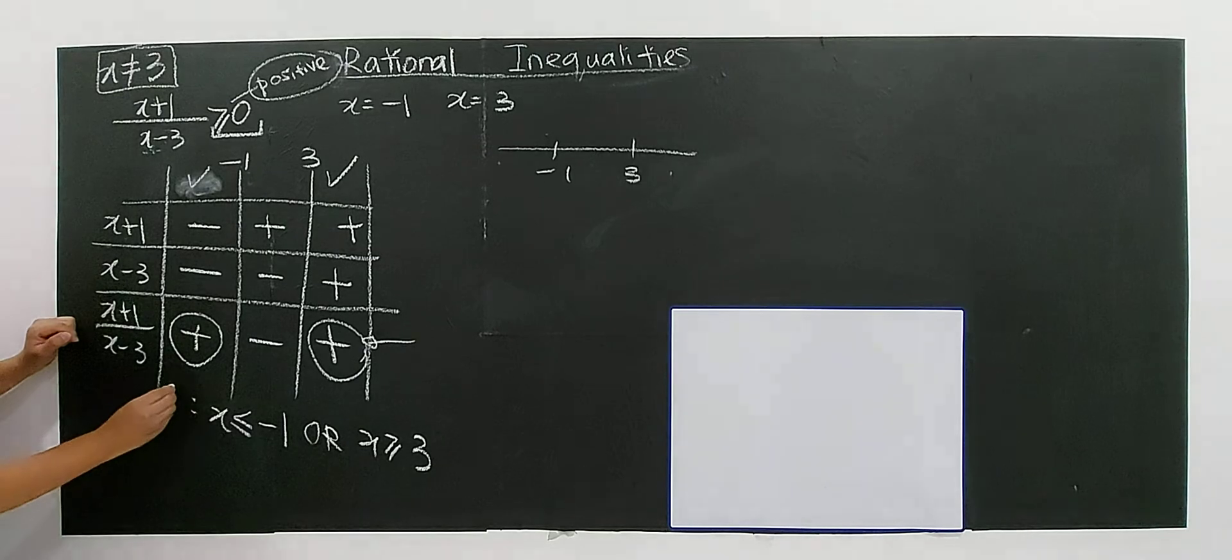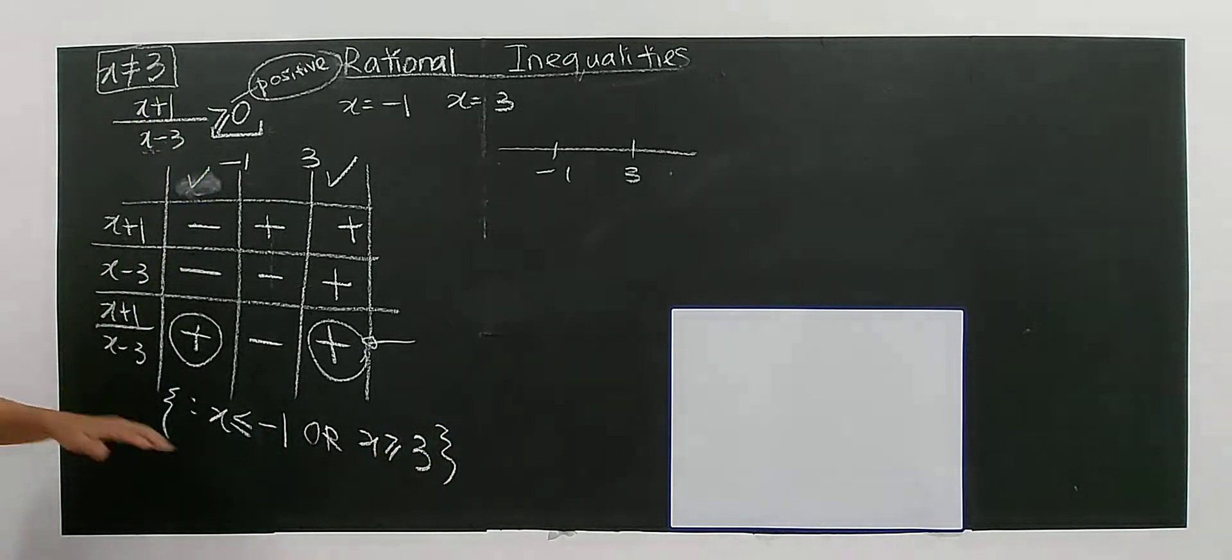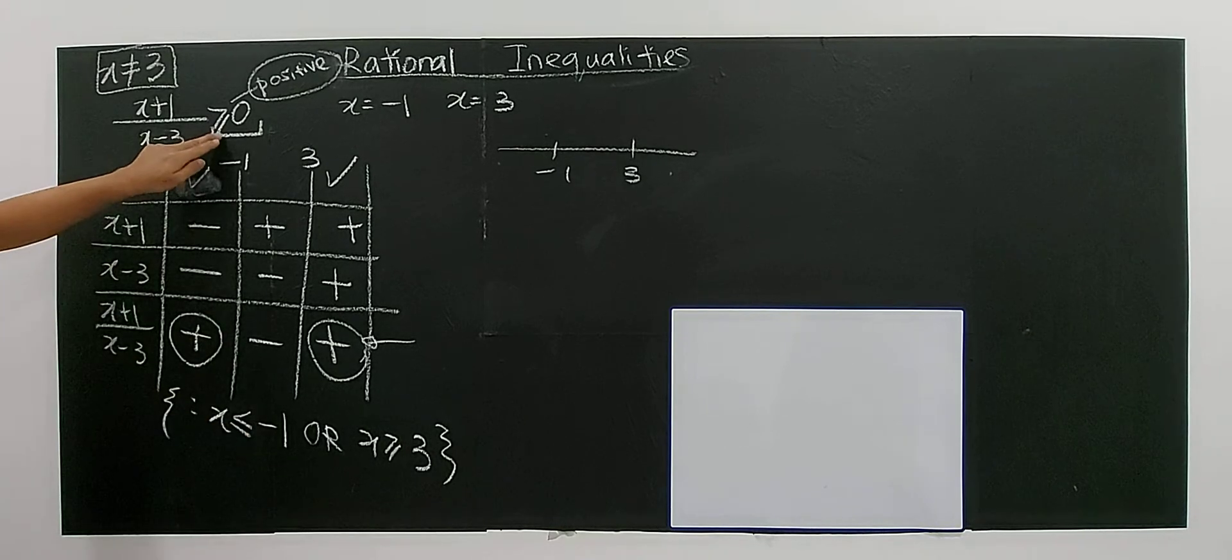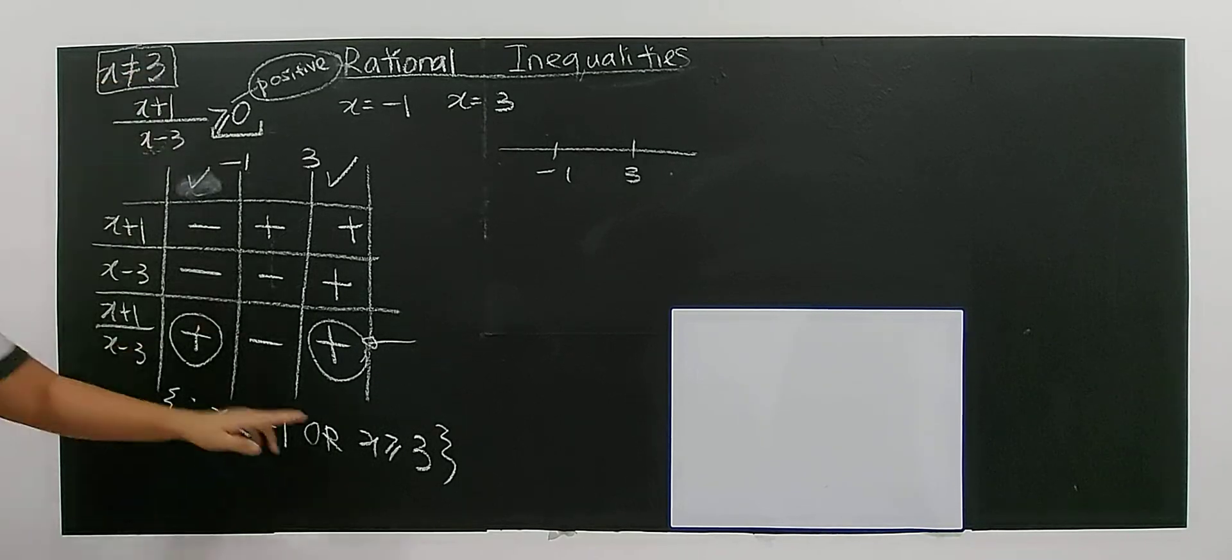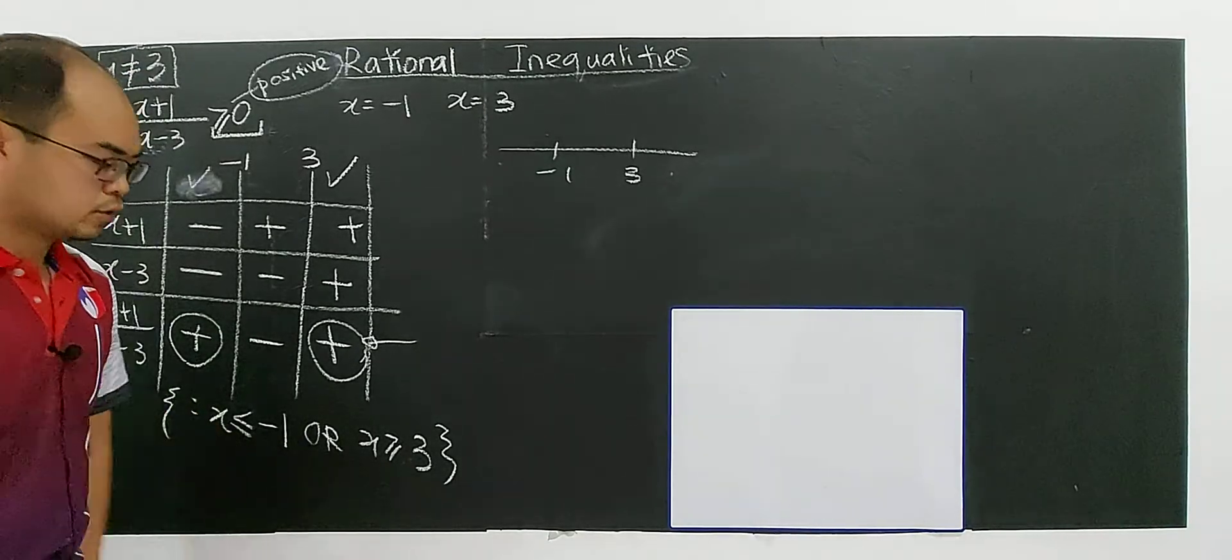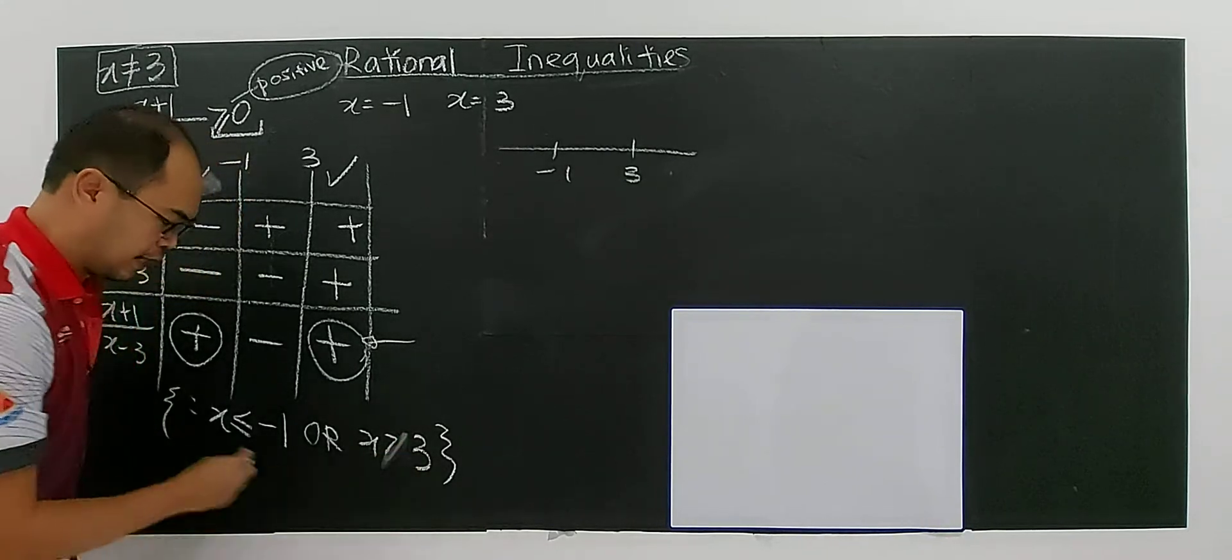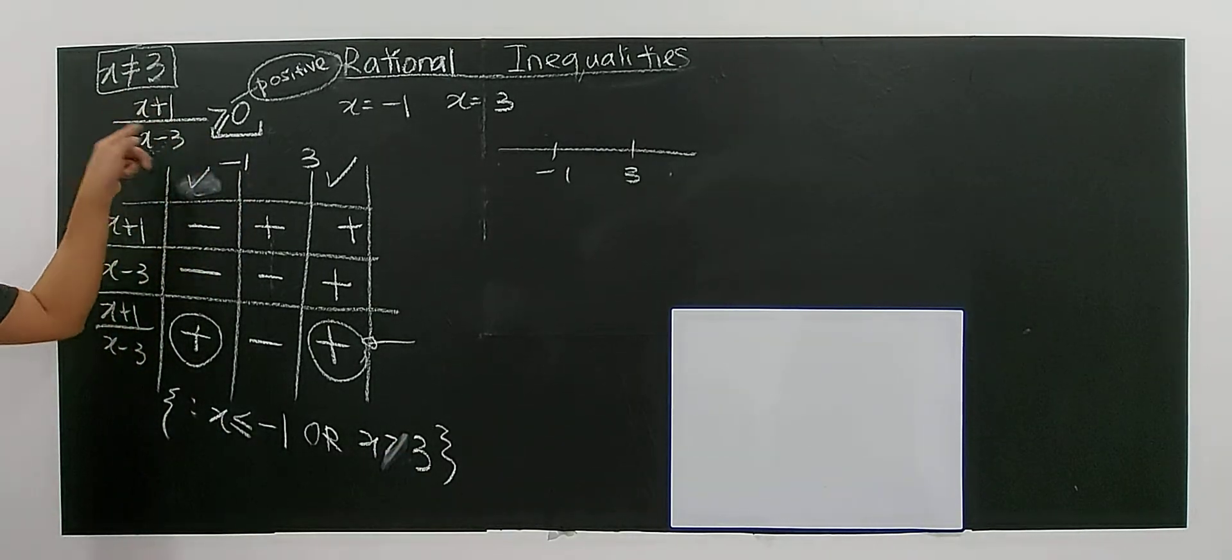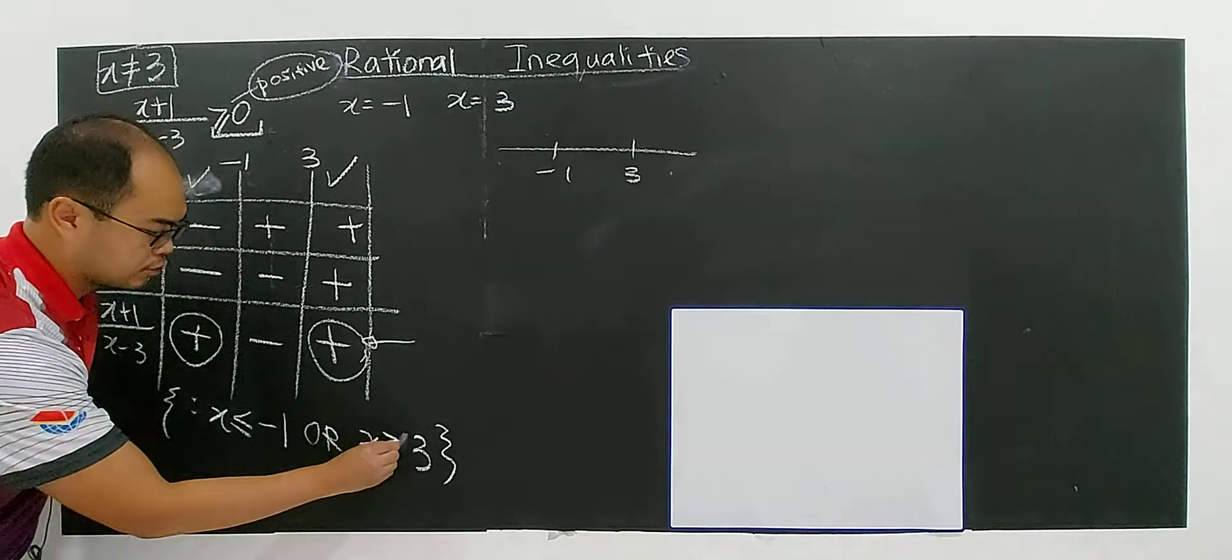But there is a mistake that I made. Initially I know that x shouldn't be three - x cannot include three. If I put an equal here it means I include three. I need to take out the three because the denominator cannot be zero. Negative one is okay - the numerator can be zero but denominator cannot be zero.